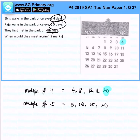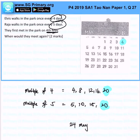And you realize that they share the same common multiple of 20 days. So 20 days after 4th May, they will meet again. That will be the 24th May — so they will meet each other again on the 24th May.